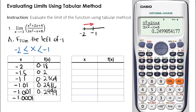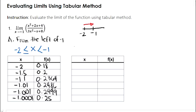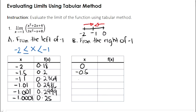Next, let's proceed to our second table. We're going to assign values of x from the right of negative 1. In our x-axis, we know that the nearest integer from the right of negative 1 is 0. So we're going to approach the value of x from 0 going to negative 1. Let's start from 0, then negative 0.5, negative 0.9, negative 0.99, negative 0.999, and lastly negative 0.9999.